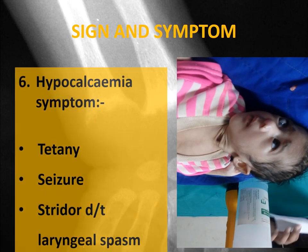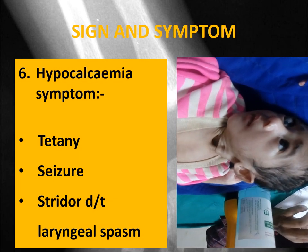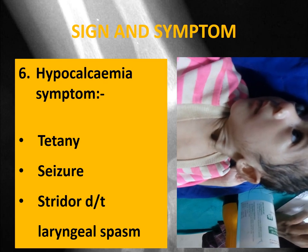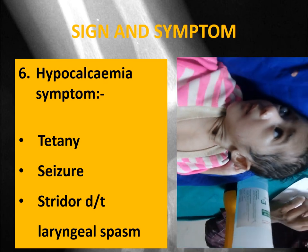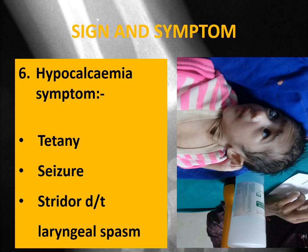Due to hypocalcemia, the infant can develop tetanic spasm, seizures, or stridor due to laryngeal spasm. In this video you can see the child is having very prominent suprasternal retraction due to laryngeal spasm, and stridor is also audible.